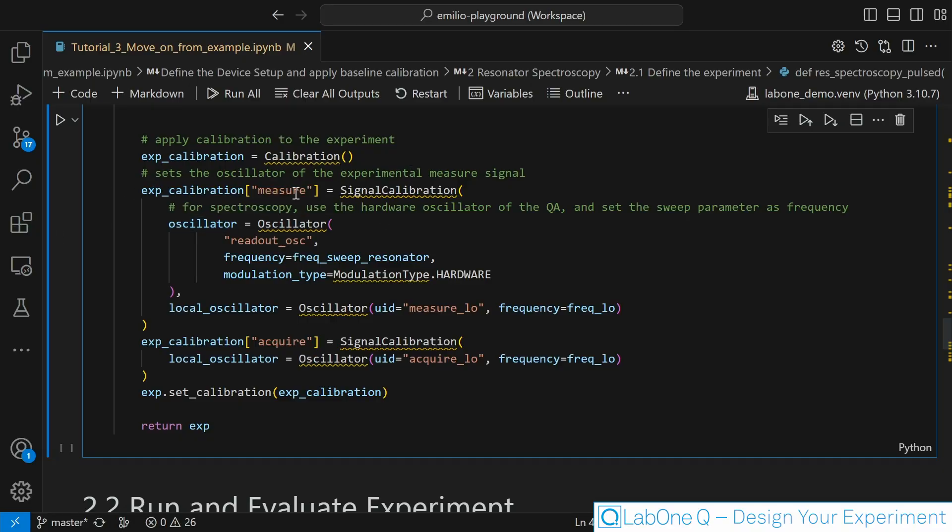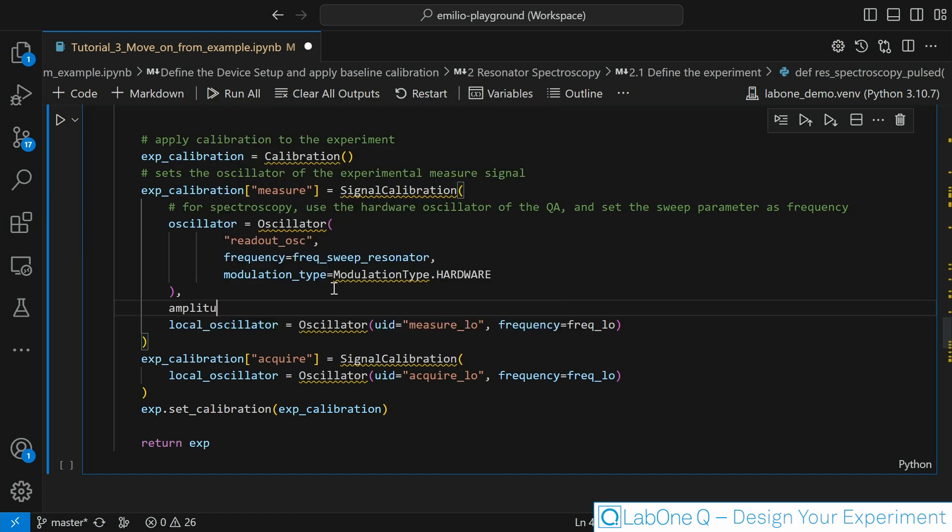Now let's go to our calibration and specifically to our experimental signal measure, which is what is sending the RF pulse to the cavity. And we just need to use one more keyword amplitude, and we pass our power sweep resonator to it. And we are done. I changed three lines of code that I transformed this experiment from a 1D sweep to a 2D sweep that is sweeping frequency and power at the same time. Let's see how it works when we are actually running it.